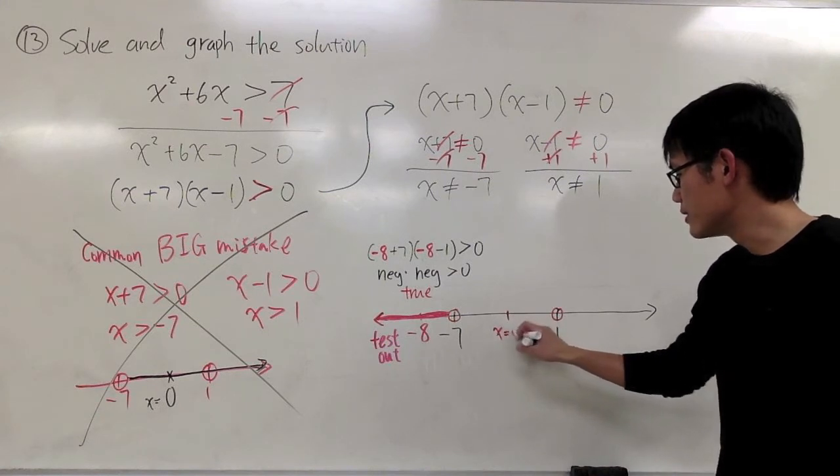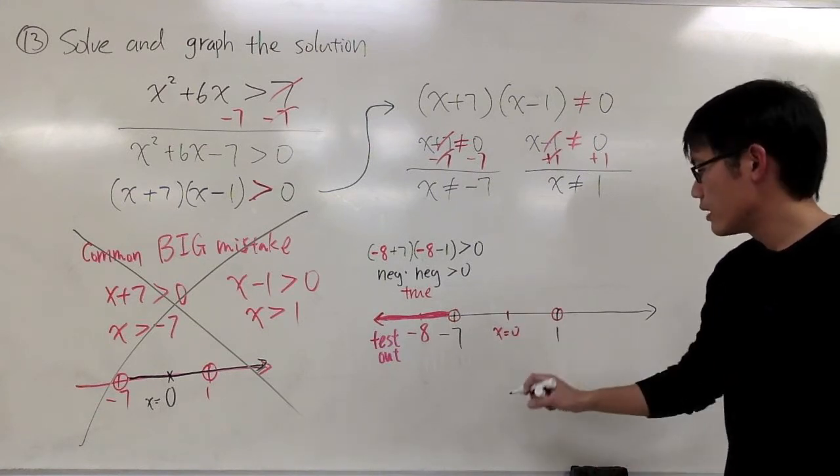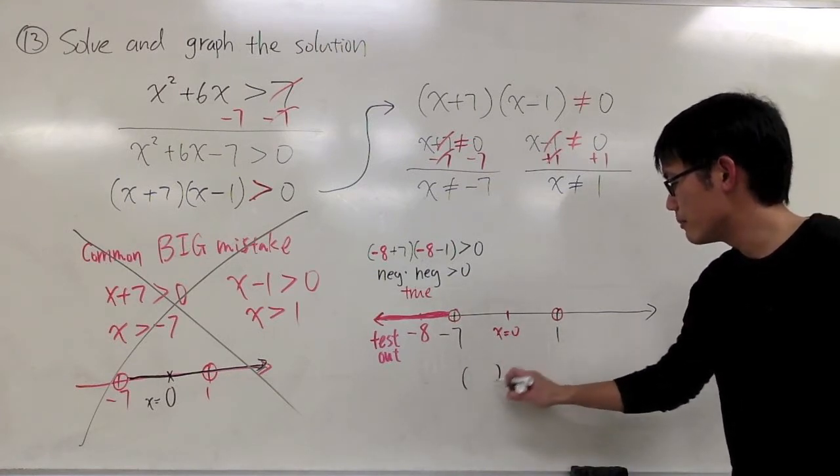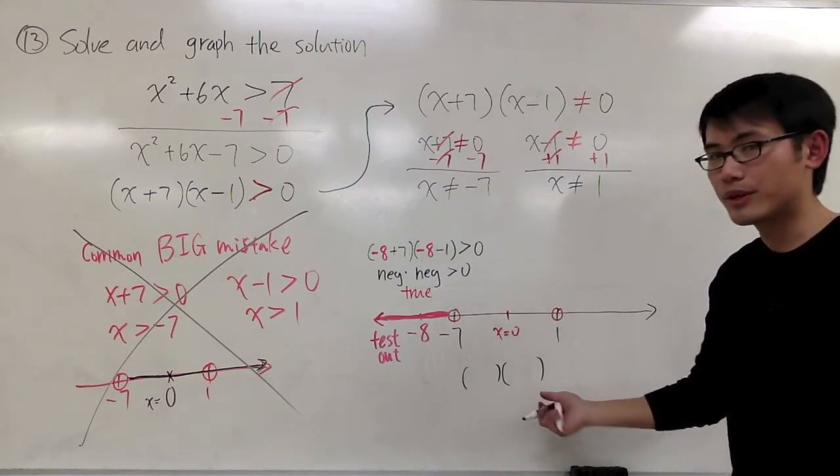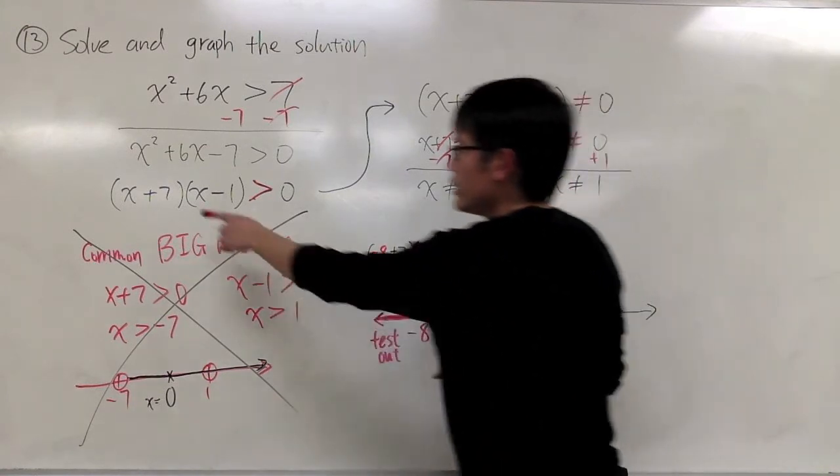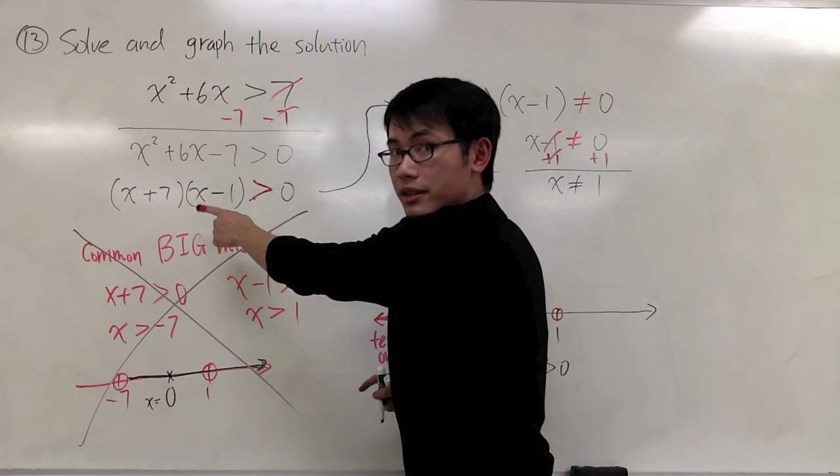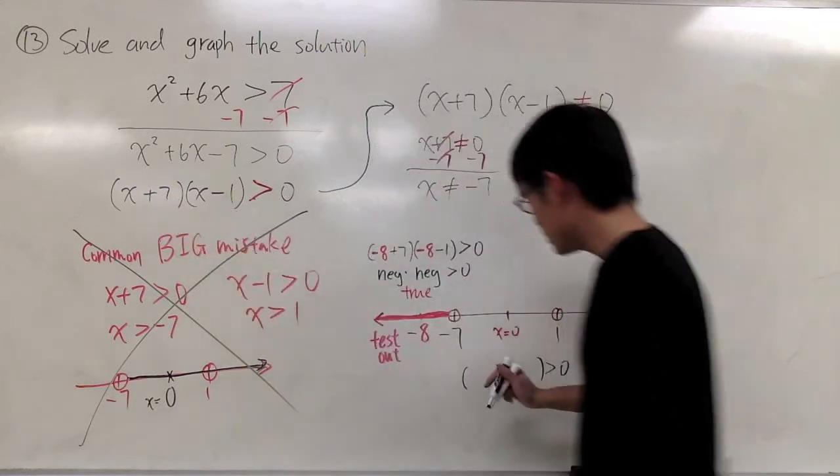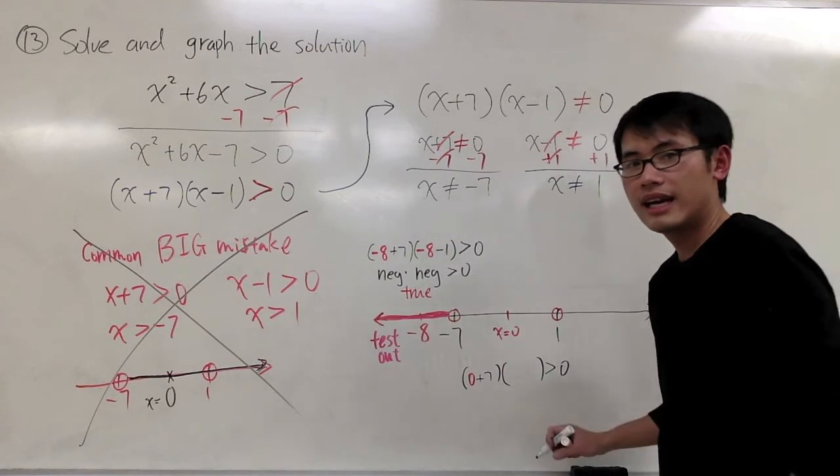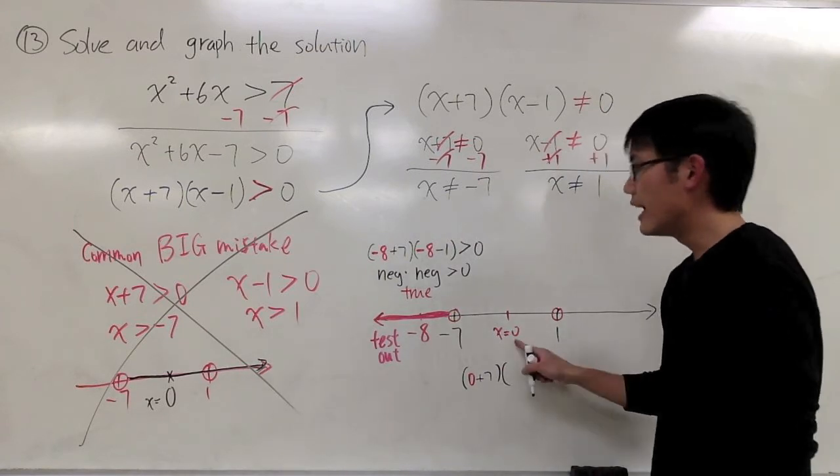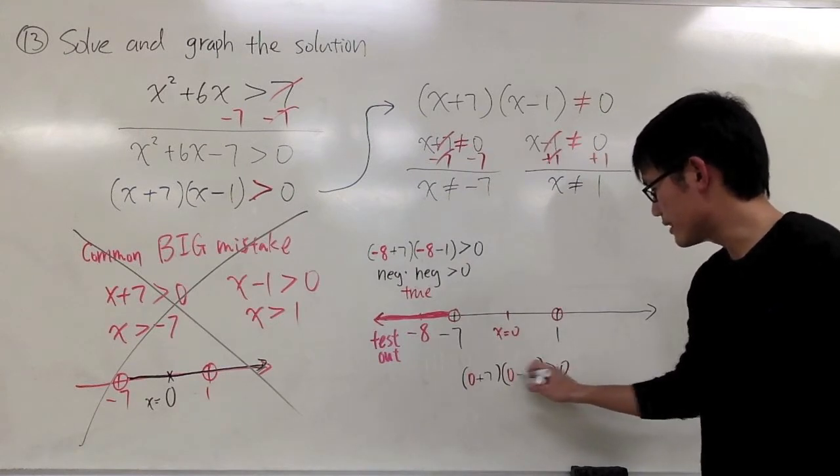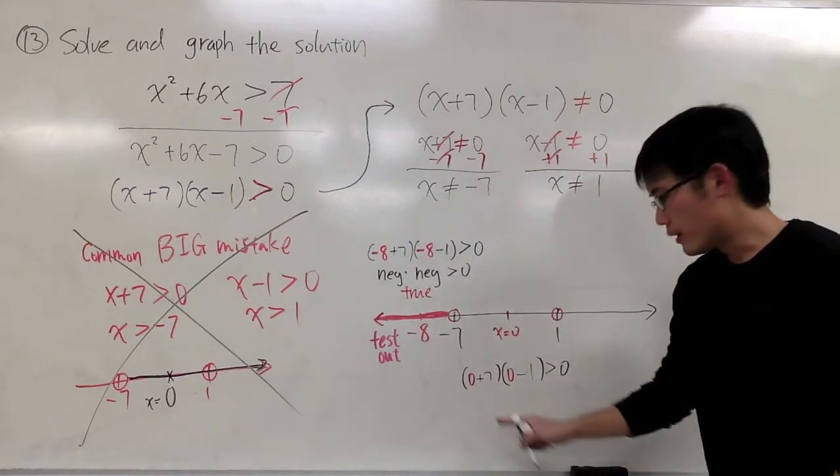Let me just do the computation one more time on the bottom right here. I will plug in zero into the factor form of the inequality. Zero plus seven, and for the second parenthesis, x is zero minus one. Zero plus seven is positive seven. So this is positive.